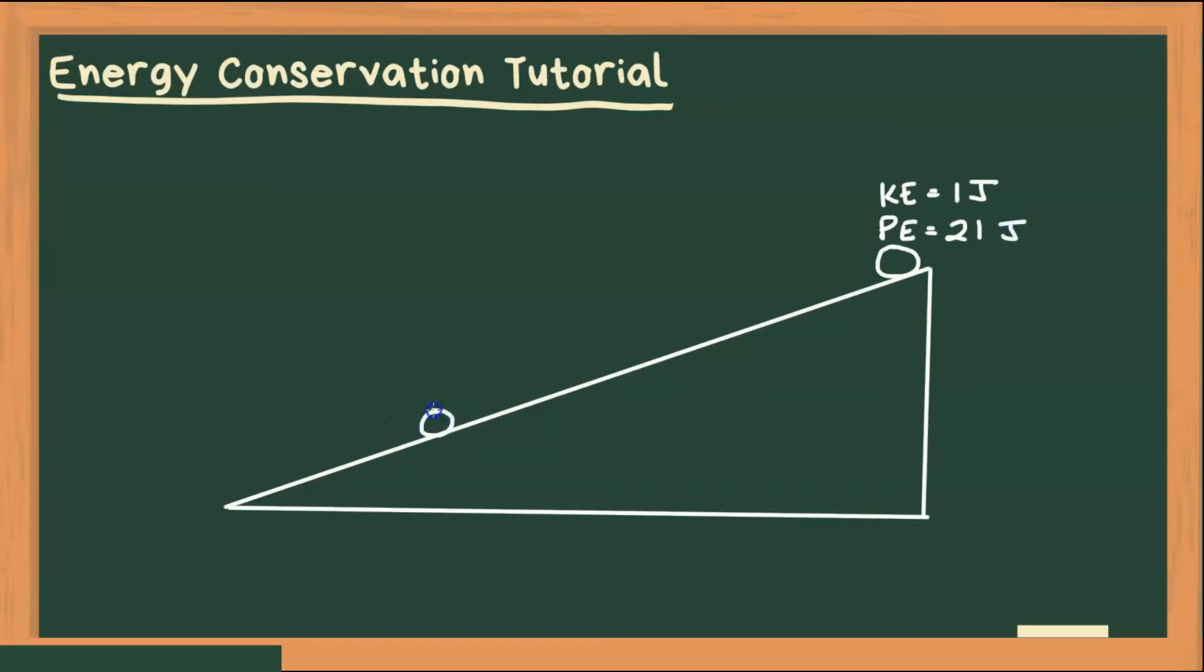And somewhere down here, our potential energy is 5 joules. Now I want to figure out how much kinetic energy we have. Alright, so let's call this point A, and this point B.